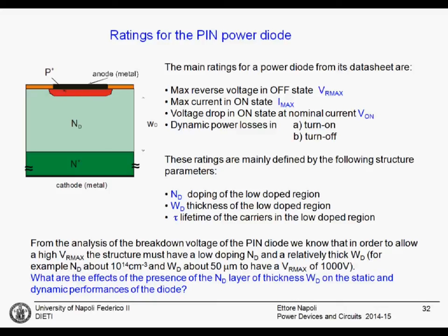From the breakdown voltage, we know that in order to get a high reverse voltage capability, we need a low doping and a relatively thick layer. For example, 10 to the 14 atoms per cubic centimeter and a thickness of about 50 microns to get around 1 kV of reverse voltage capability. But what is the presence of this lightly doped, thick layer doing to the static and dynamic performance of the diode?